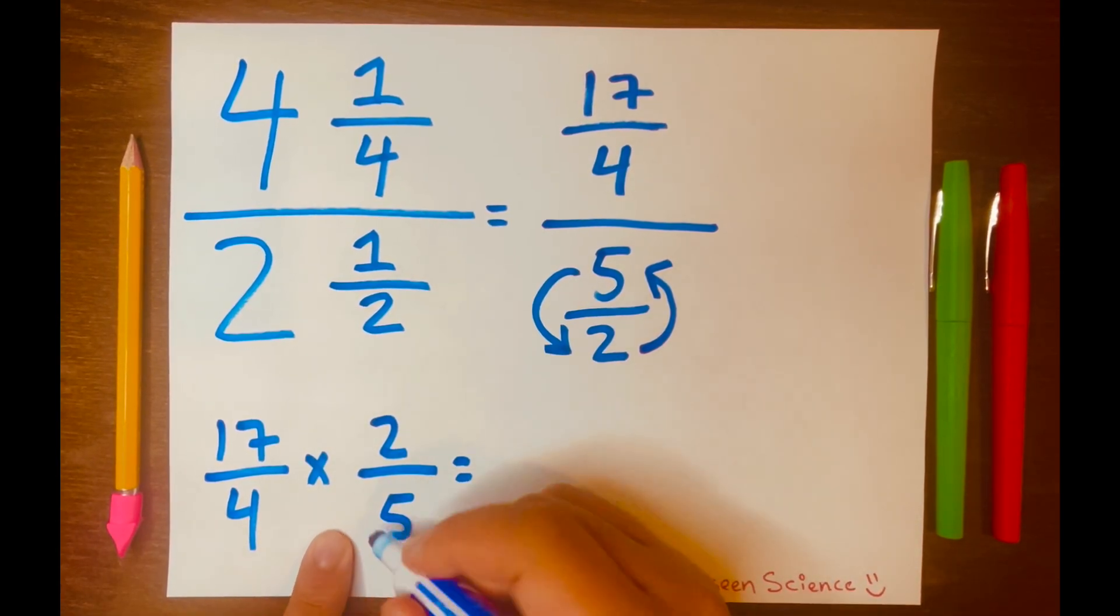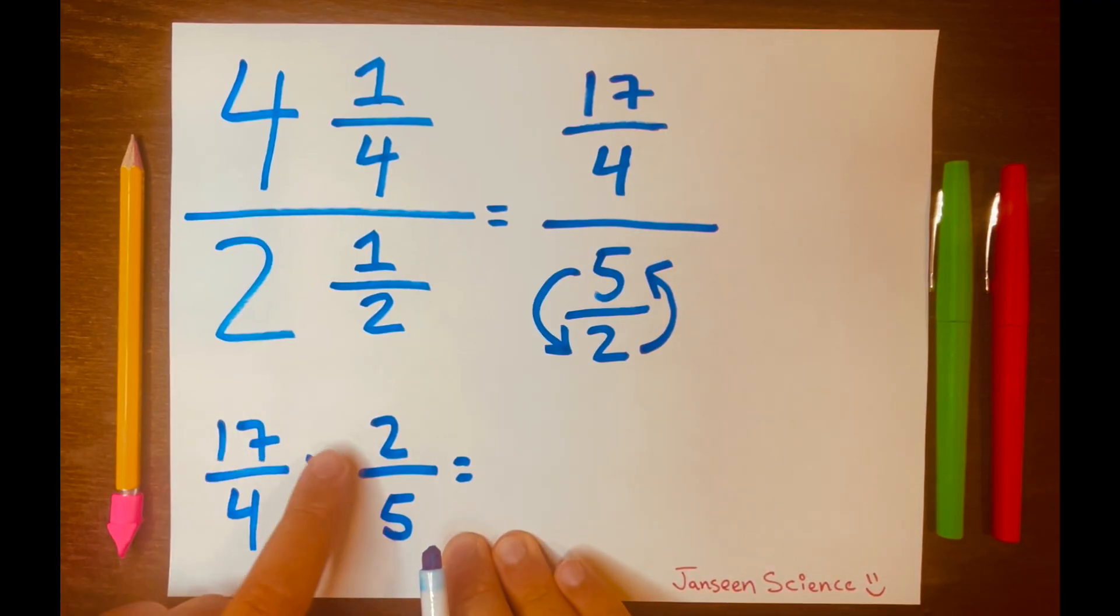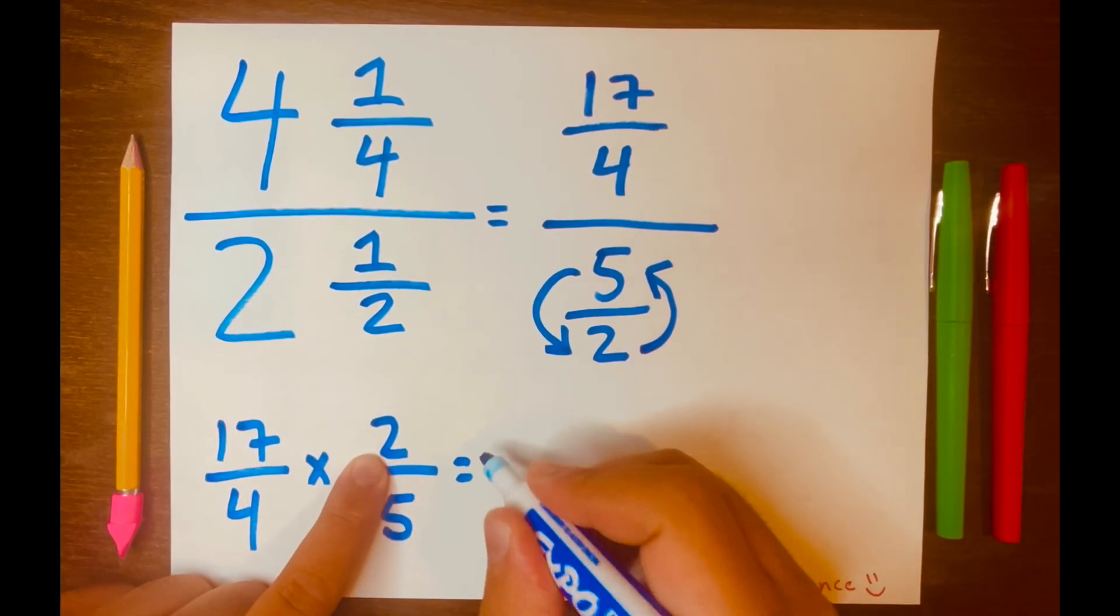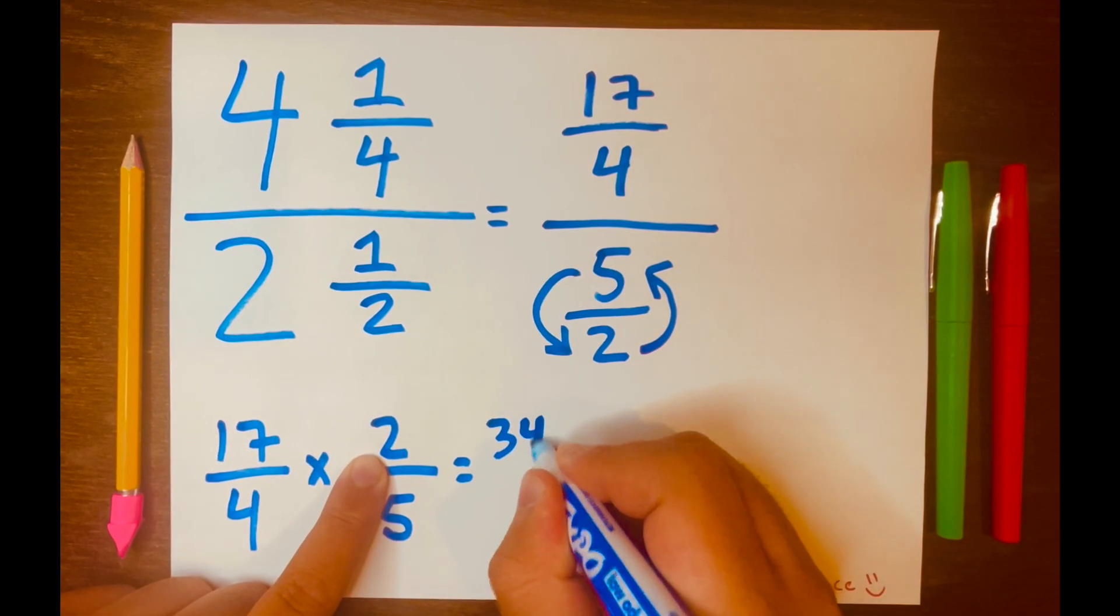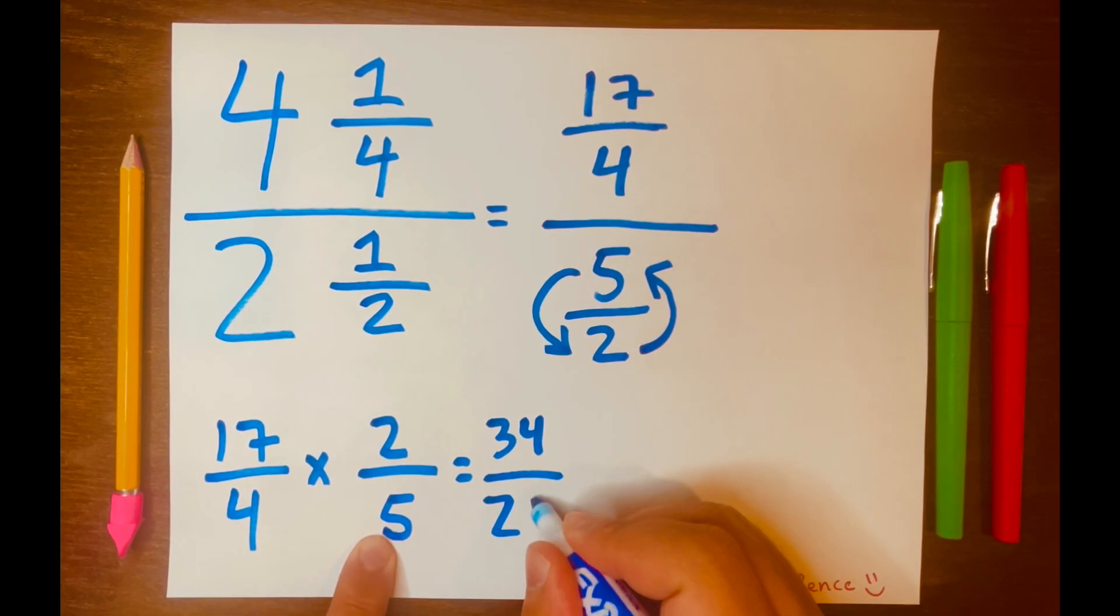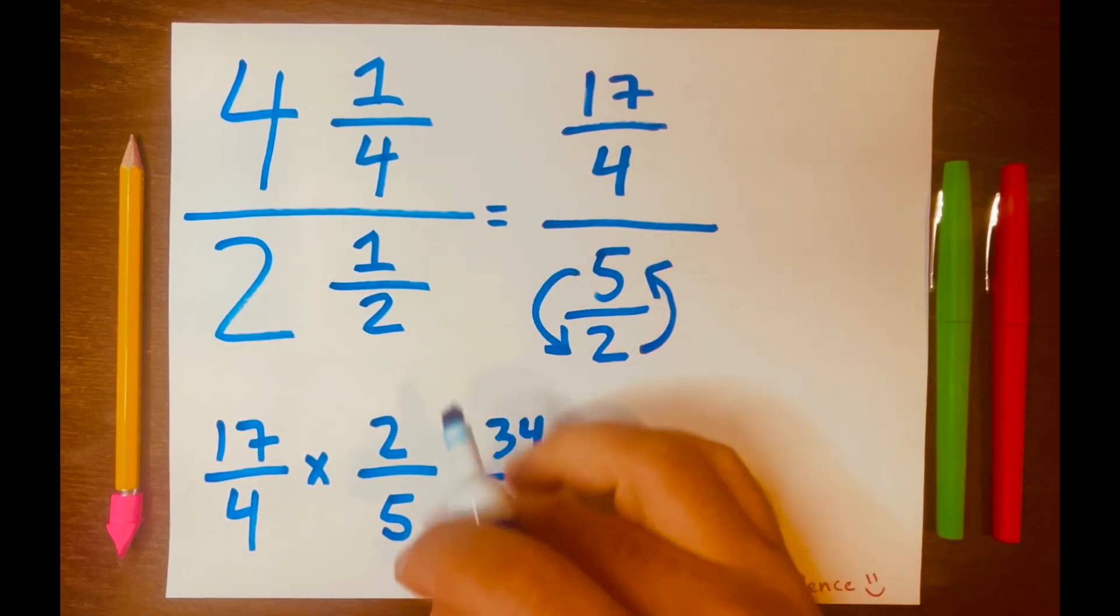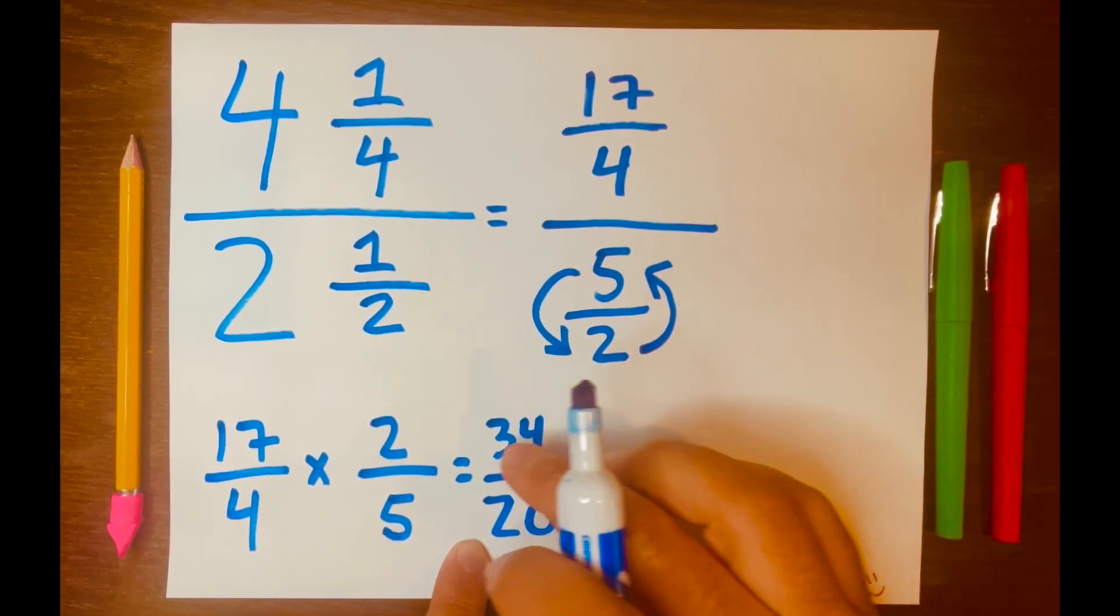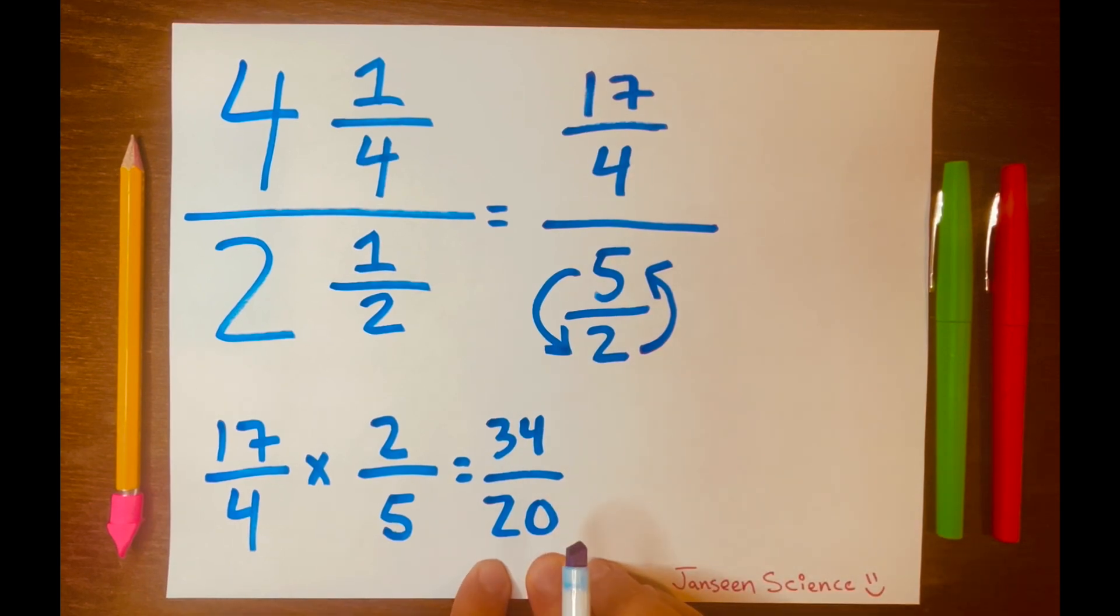And then we just multiply across. So 17 times 2 is 34, and 4 times 5 is 20. And that is our fractional answer, 34 over 20. However, we need to simplify this to its lowest terms.